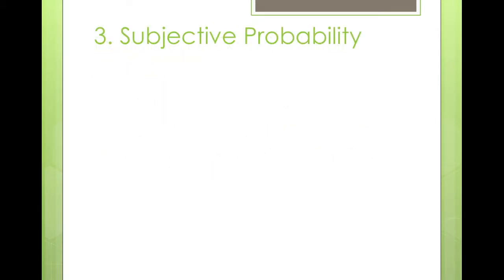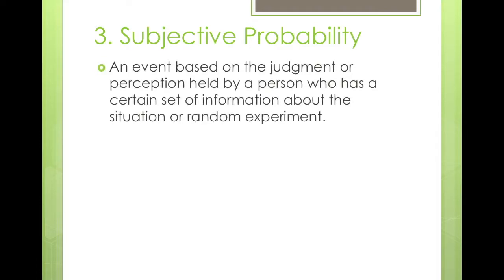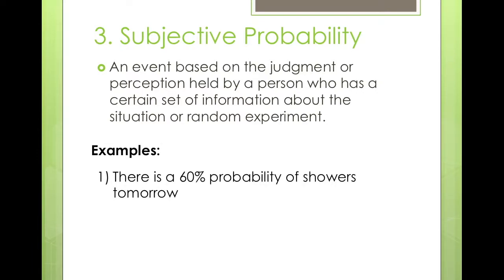The last type is subjective probability. It is an event based on the judgment or perception held by a person who has a certain set of information about the situation or random experiment — it's subjective towards the person because they are knowledgeable about that subject. For example, there is a 60 percent probability of showers tomorrow. It is subjective because the person telling you this is probably a meteorologist who knows much more about the subject.